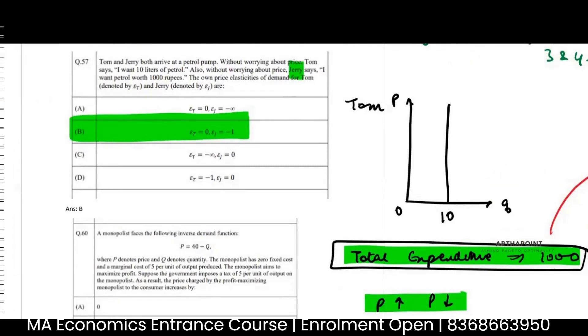And you can check for Tom also, quantity is unchanged when price keeps on changing. So change in quantity due to change in price is 0. There is no change in quantity so elasticity is 0.